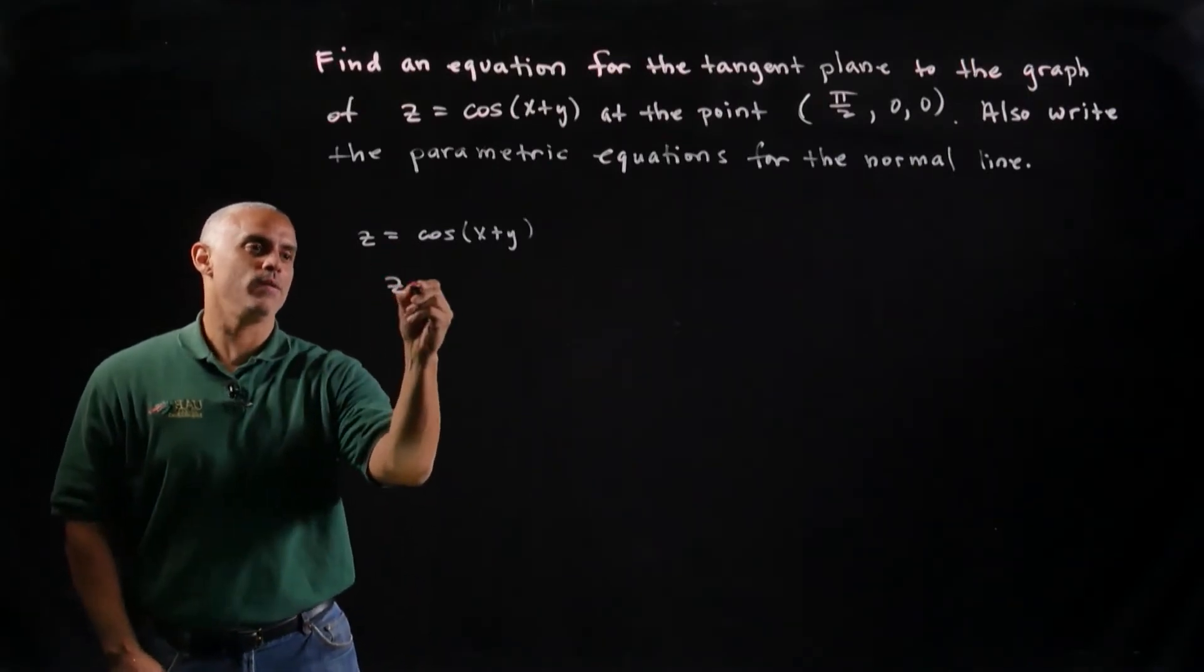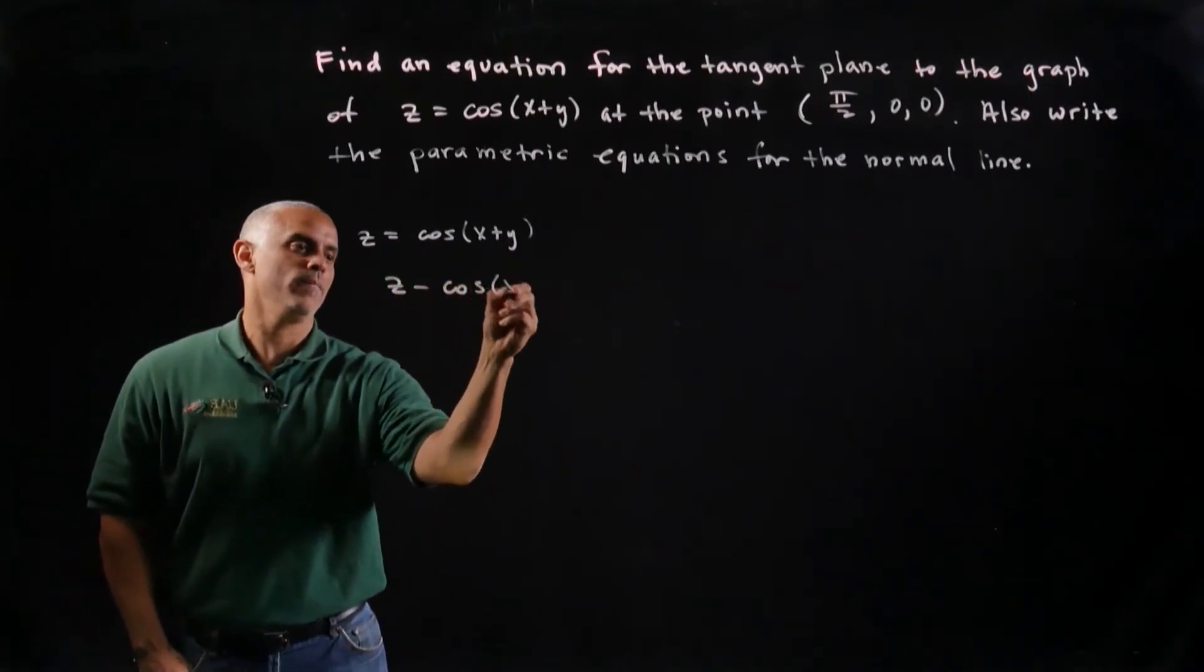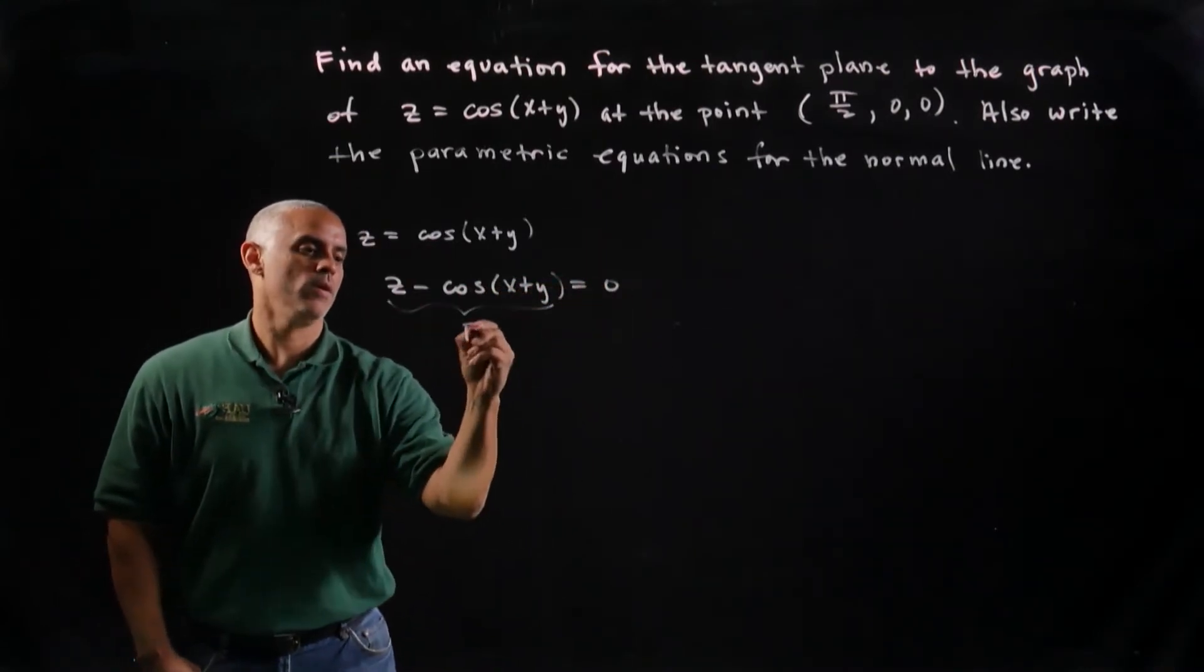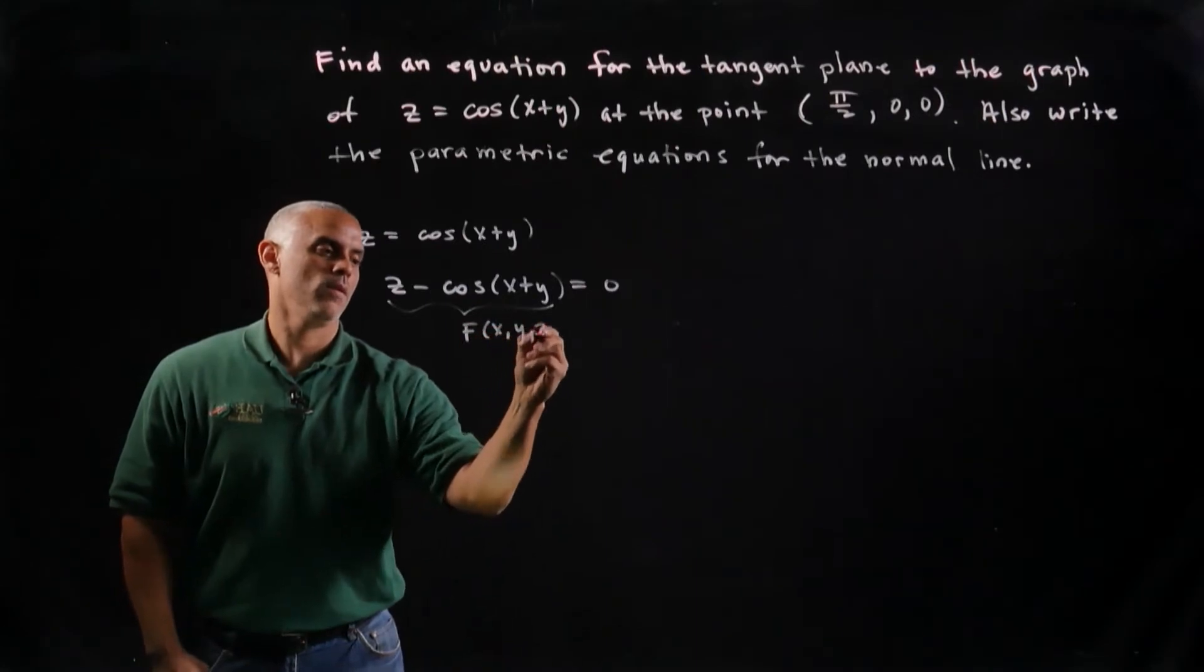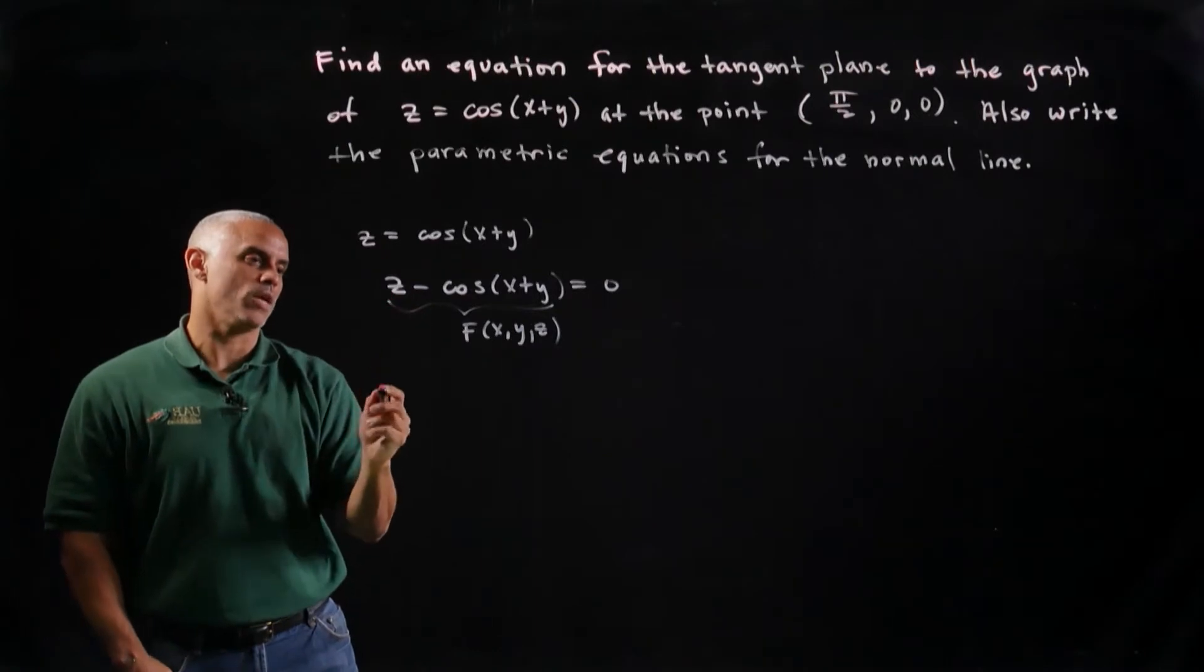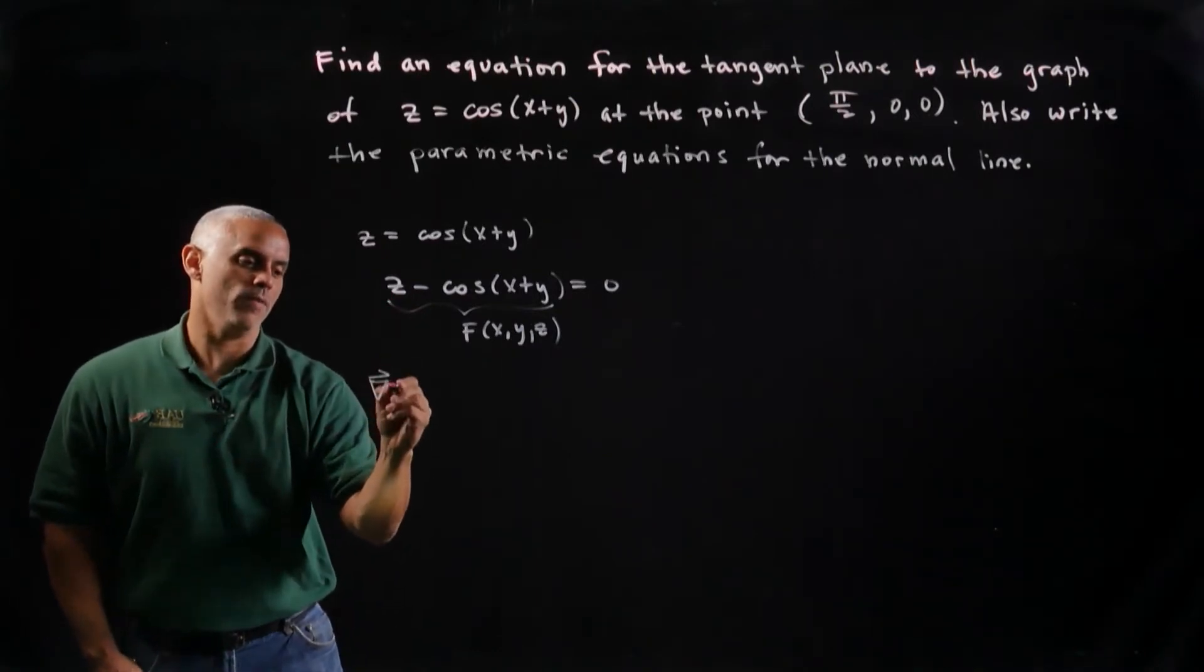So I'll simply write z minus the cosine of x plus y and say the zeroth level surface of some function f. So if I let f equal to z minus cosine of x plus y.